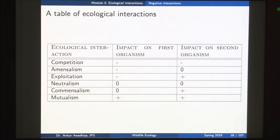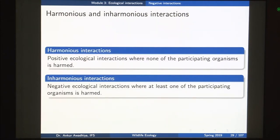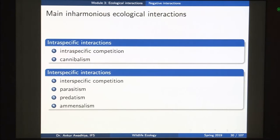In today's lecture, we will focus on the inharmonious interactions. Harmonious interactions are positive ecological interactions where none of the participating organisms is harmed. In the case of inharmonious interactions, these are negative ecological interactions where at least one of the participating organisms is harmed, which we will consider in today's lecture. The main kinds of inharmonious ecological interactions can be divided into intraspecific interactions — between individuals of the same species — and interspecific interactions, between two different species.